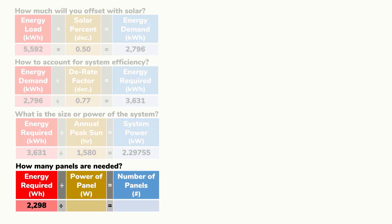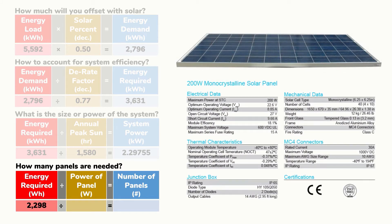After selecting a solar panel, you can determine how many are needed to provide that power. Assuming a 200-watt solar panel, we divide 2,300 watts of required power by 200 watts per panel. This gives us 11.5 panels — and since you can't use half a panel, you could round down to 11 panels, which would provide slightly less energy than anticipated, or round up to 12 panels, which would provide a bit more energy.